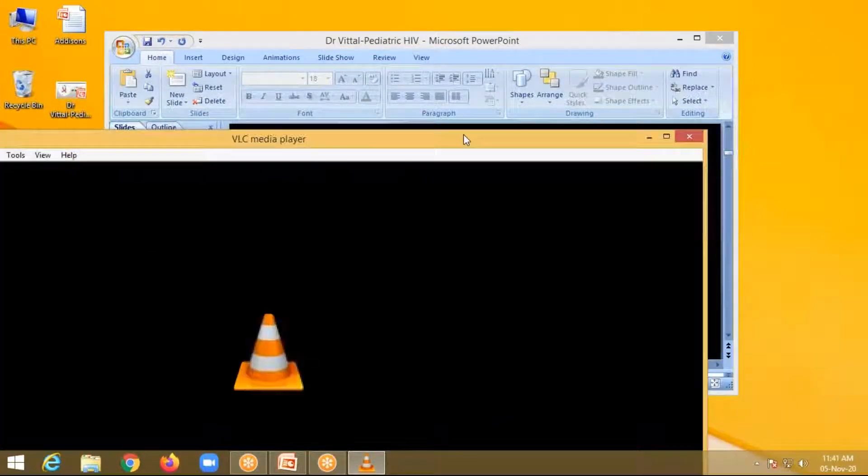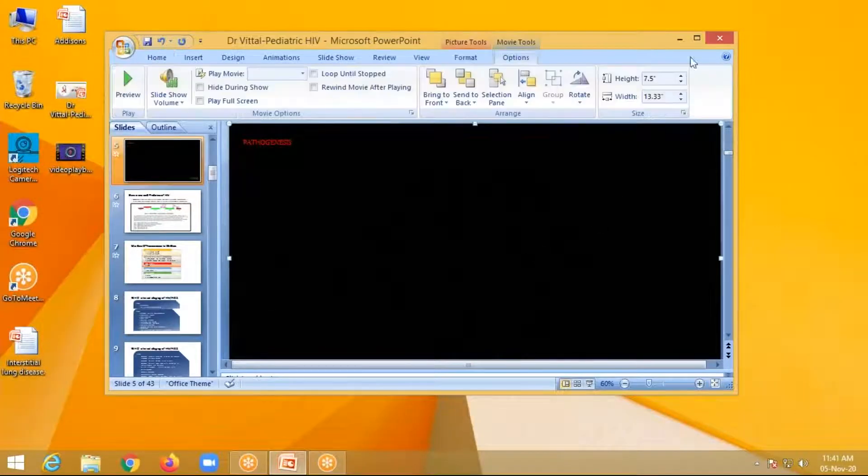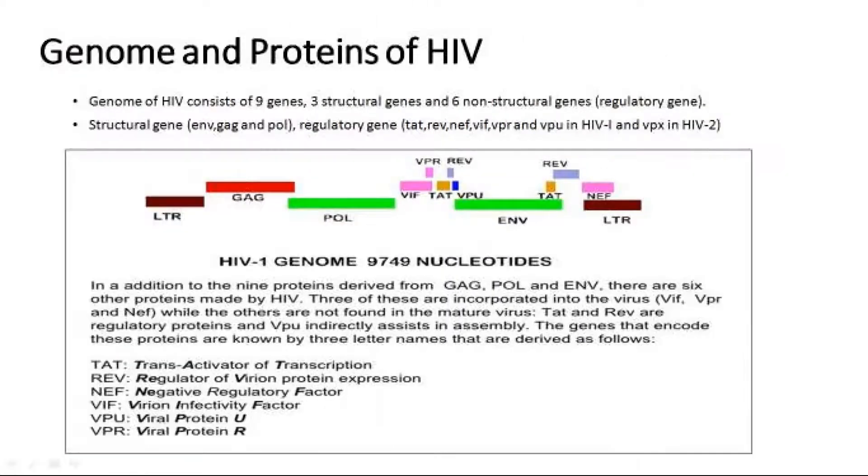In a nutshell, what the video shows is that there are several stages: from attaching to the CD4 T cell, then at entry, then reverse transcriptase to produce DNA from RNA, then integration, and ultimately proteases which break large proteins into different sizes. Each of these enzymes is a target point for drug development. So when we talk about HIV drugs, you need to recollect all these stages. HIV consists of nine genes — three structural genes and six non-structural regulatory genes.